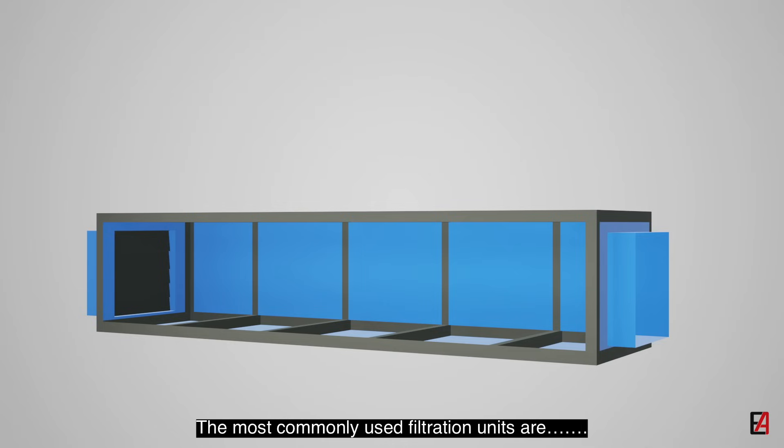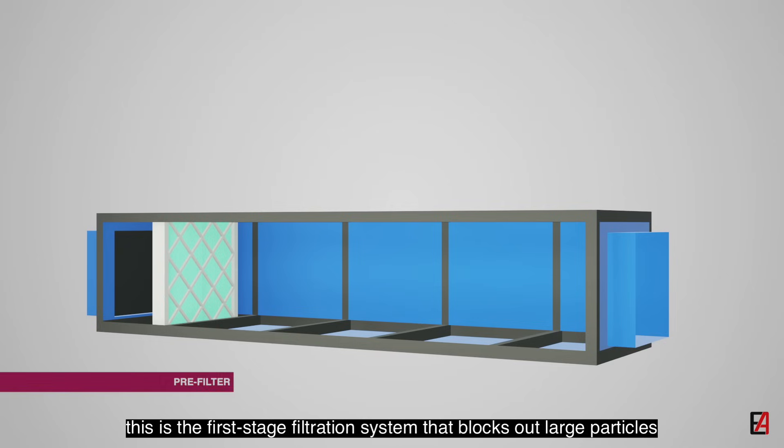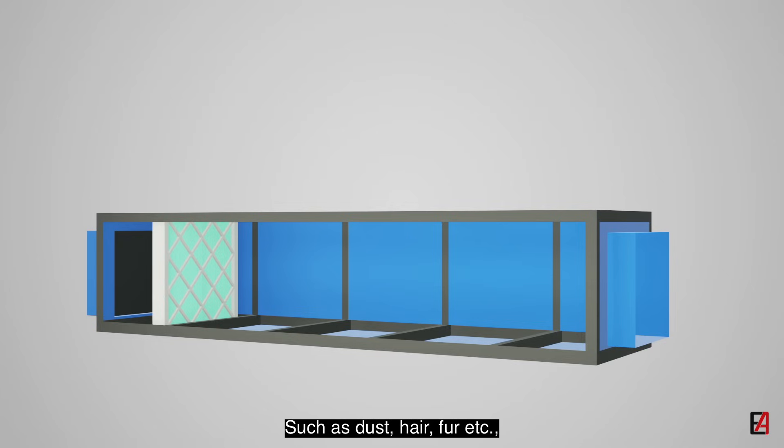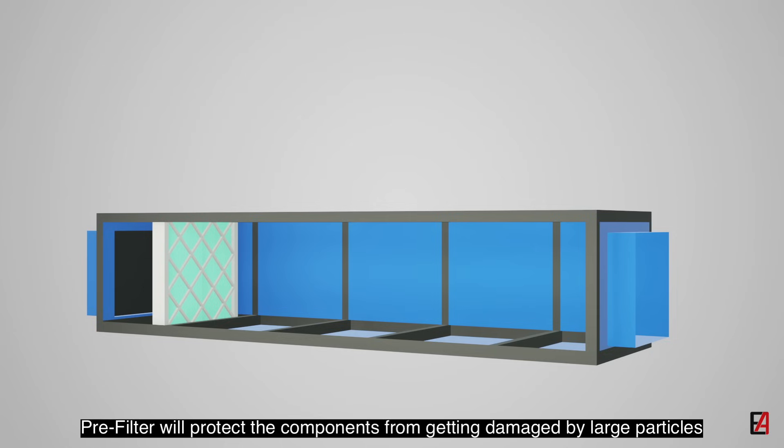The most commonly used filtration units are, first one is the pre-filter. This is the first stage filtration system that blocks out large particles such as dust, hair, fur, etc. Pre-filter will protect the components from getting damaged by large particles.